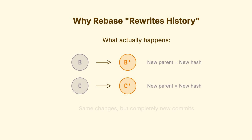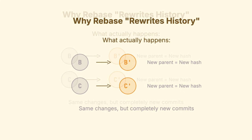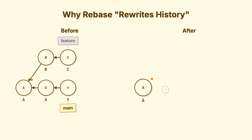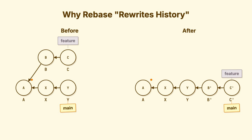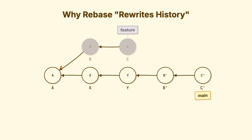Git can't move commits — that's not a thing. So what rebase actually does is look at commit B, calculate the changes it introduced, create a new commit B1 with those same changes but with Y as its parent instead of the original base. Then look at commit C, calculate its changes, create a new commit C1 with those changes sitting on top of B1. Move your feature branch to point at C1.